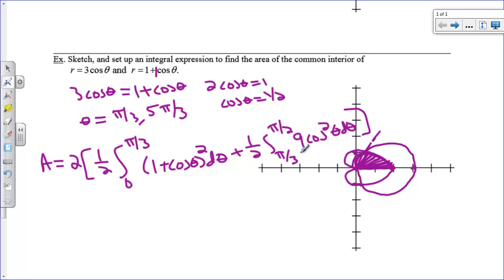And doubling that will take care of adding up this area that's down here. So finding points of intersection are very important whenever we have common interiors or maybe inside of one polar graph and outside of the other. So there's a couple more examples, and I will see you guys tomorrow.